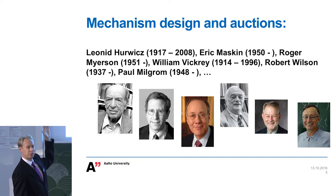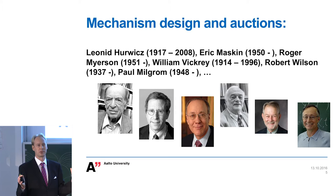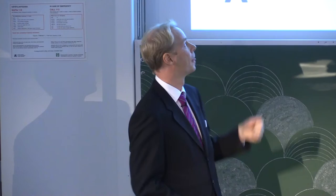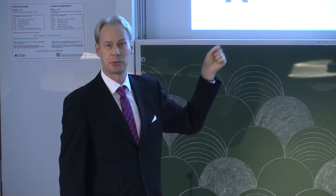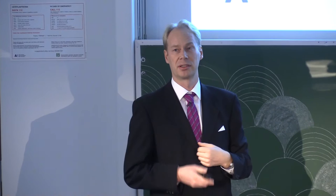Putting together games and informational asymmetries has given rise to flourishing research in microeconomics. Almost everything interesting in microeconomics has something to do with asymmetric information and strategic interaction. This theory is called mechanism design — a theory about how institutions and trading institutions should be designed, taking into account agents with selfish interests and private information. Auction theory is one part of this bigger literature.